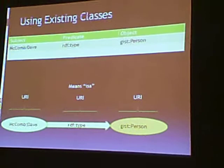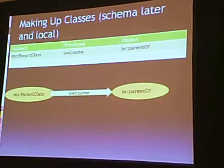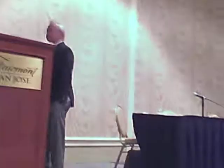But you don't have to be limited to classes that other people made up — you can make up your own. You make them up with a series of rules about a formal definition of a class. Here's an incredibly simplistic example: I'm going to define a new class as anyone who is the parent of someone else. So I just made up that class — that's my definition.